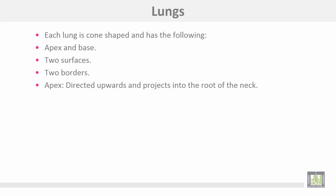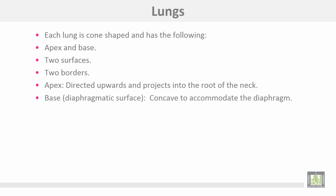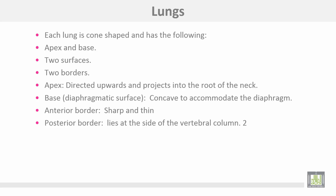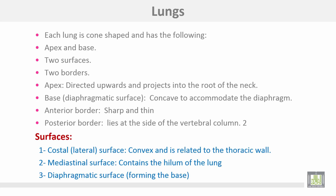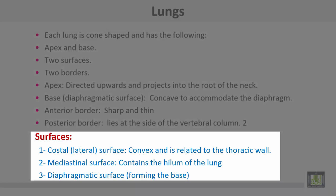The apex is directed upwards and projects into the root of the neck. The base, or diaphragmatic surface of the lung, is concave to accommodate the diaphragm. The anterior border is sharp and thin, but the posterior border lies at the side of the vertebral column. The surfaces include a costal surface, or lateral surface, which is convex and related to the thoracic wall. The mediastinal surface contains the hilum of the lung, and the diaphragmatic surface forms the base of the lung.